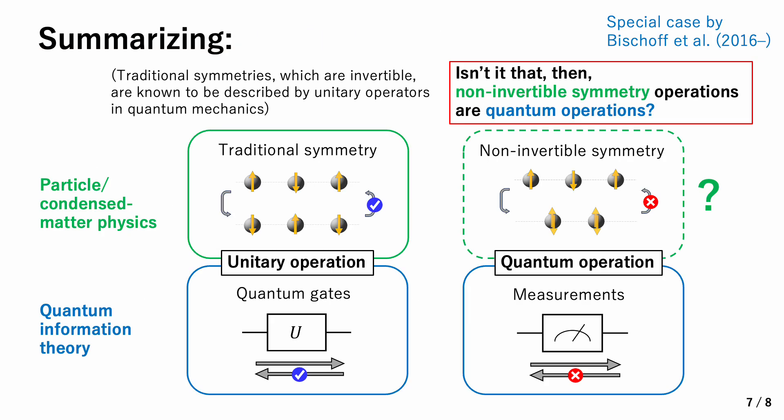Let me summarize. In particle physics and condensed matter physics, we consider two types of symmetries: the traditional symmetry, which is invertible, and the non-invertible symmetry, which is new. In quantum information theory, people consider quantum gates and measurements. Quantum gates are invertible and described by unitary operations, and measurements are not invertible and described by quantum operations. It so happens that the traditional symmetry in particle and condensed matter physics has been known to be described by unitary operations. Then the natural question arises: isn't it the case that non-invertible symmetry operations are actually quantum operations?